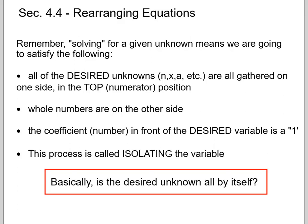All the whole numbers or decimals or everything else is going to be on the other side. The coefficient, which is the number in front of the desired variable, we want to try and make that a 1. It's not always written, but it's a 1. And we're going to call this whole process Isolating the Variable. So basically is the desired unknown all by itself. And we've been doing this for a little while, but we're going to do a quick review.